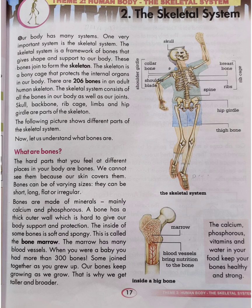Skull, backbone, ribcage, limbs and hip girdle are parts of the skeleton, as you can see in the picture. The following picture shows different parts of the skeletal system. You can see all those parts from the picture and make a note of them.